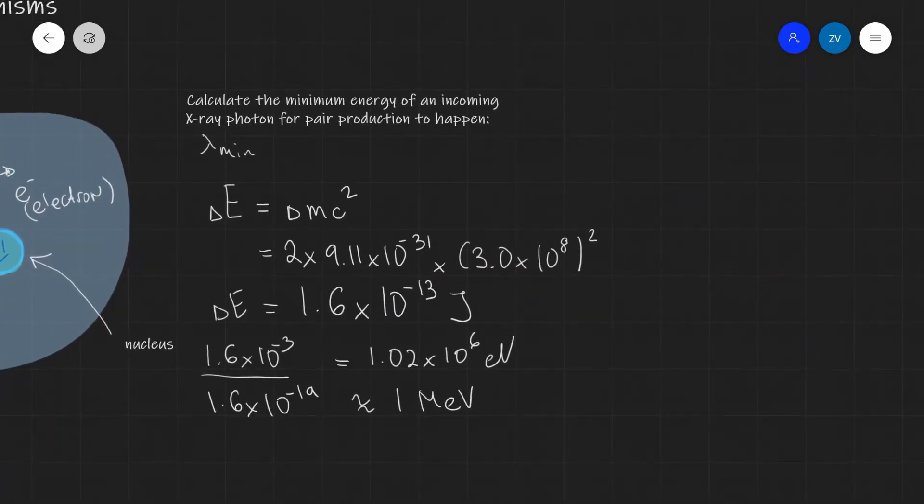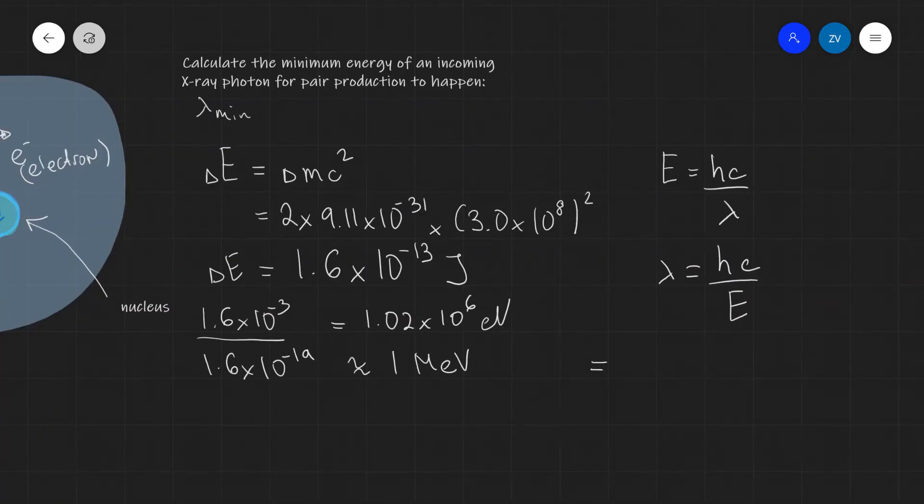So what I'm going to do is set that energy to be hc over lambda. And then I'm going to rearrange for lambda. So lambda will be hc divided by E, like so. Plugging in some numbers, this will be h, Planck's constant, 6.63 times 10 to the power of minus 34.